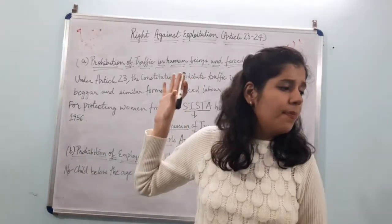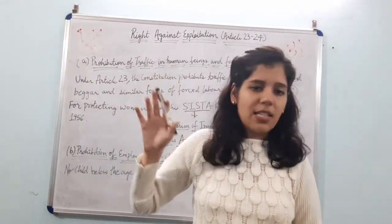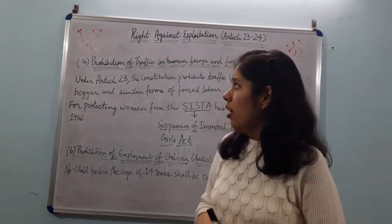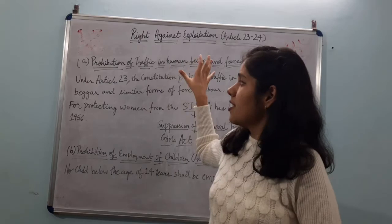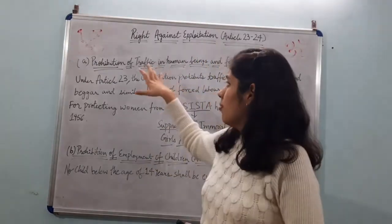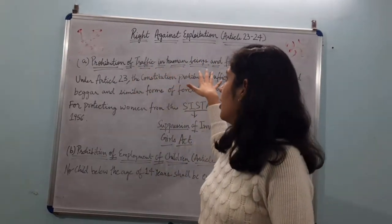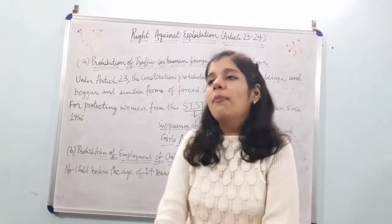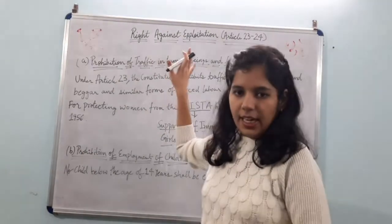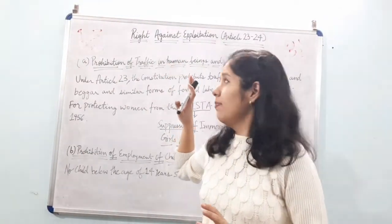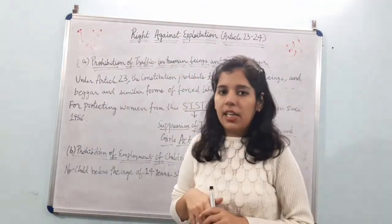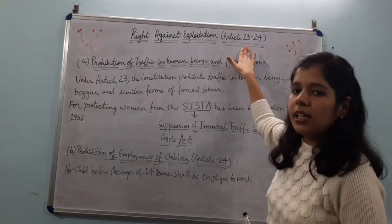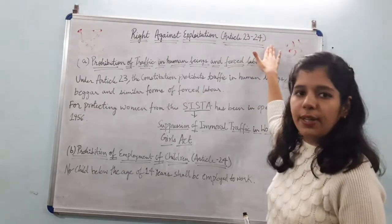Now we are going to talk about Right Against Exploitation, which is your Article 23 and Article 24. Prohibition of traffic in human beings and forced labor — this is the third fundamental right.